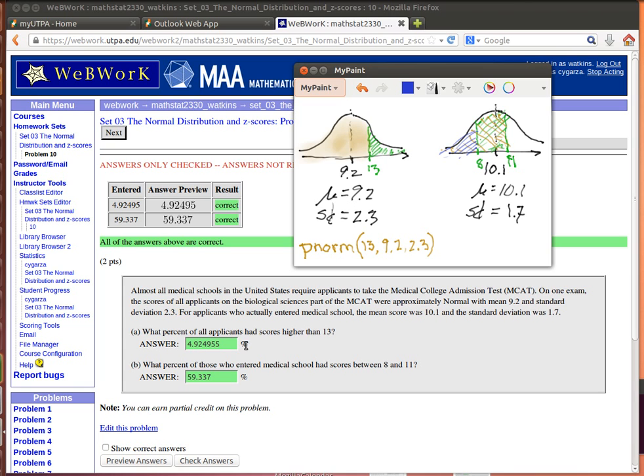Now they ask us two questions here. They say, what's the percent of all applicants that had a score greater than 13? The cool thing is that R has something that will tell us this brown area in that population.